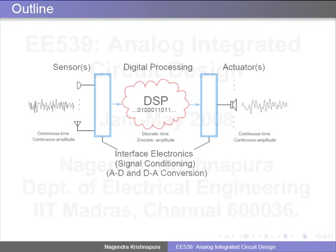Analog electronics and analog ICs are used in blocks where you have analog signal processing as well as analog-to-digital conversion and digital-to-analog conversion. The conversion between analog and digital formats is done by analog ICs. We will be studying a subset of this type of ICs. Today's chips will almost all have some analog content — depending on functionality, the analog content may be more or less.